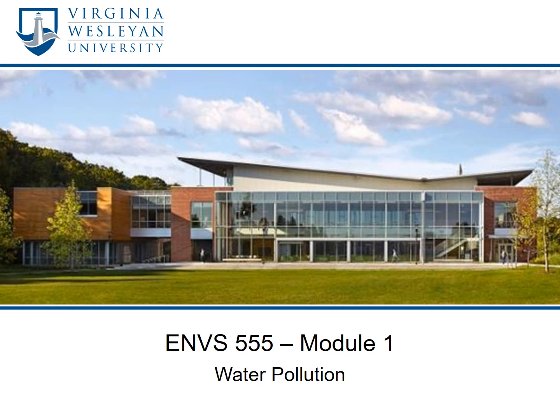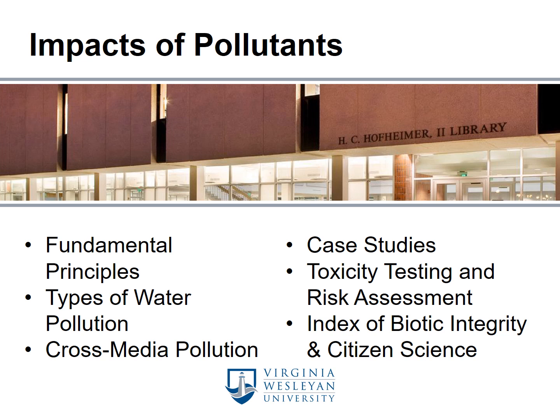Welcome to ENVS 555. In Module 1, we'll be looking at water pollution — different types of water pollution and different ways that they affect organisms and ecosystems. We'll examine some of the fundamental principles that underlie our understanding of different water pollutants. One critical principle is that different types of pollutants affect water in different ways. For example, a cross-media pollutant is not initially a water pollutant — it's an air pollutant that then gets deposited and ends up in water bodies. We'll also look at a couple of case studies, toxicity testing, and risk assessment, and finish with an examination of the Index of Biotic Integrity as a way of measuring biological communities and inferring water pollution, including the role of citizen science.